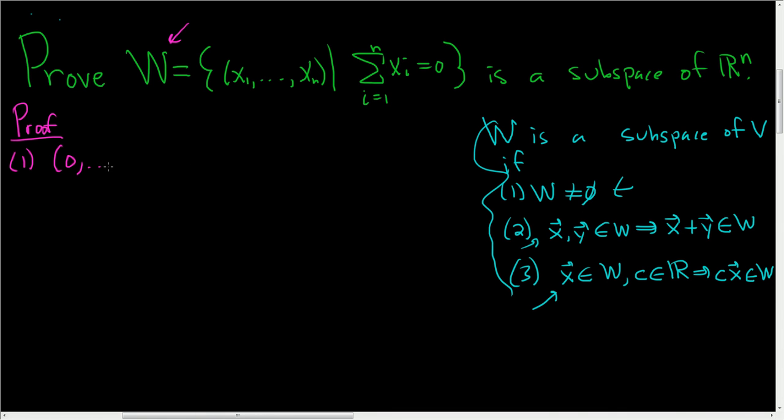So zero, dot, dot, dot, zero. This guy is in W, right? Because if you add up all of the components of this vector, you get zero plus zero plus zero, dot, dot, dot, et cetera, and there's n copies of zero. But zero plus zero is simply zero. So no problems there. So this shows that W is non-empty.